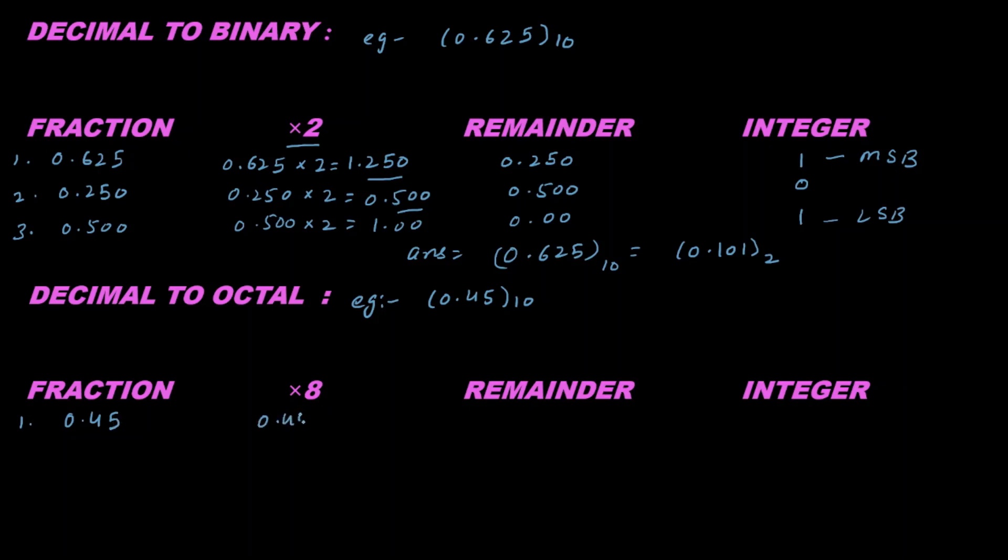Now multiply 0.45 by 8. When I multiply this, I get 3.60. So 0.60 is remainder and the integer is 3. In the second step, write 0.60 here, so 0.60 times 8 gives 4.80.